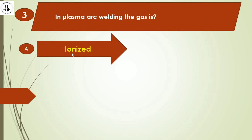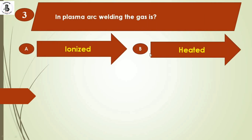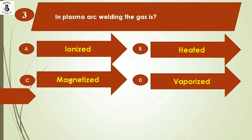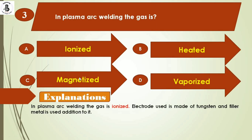Next question: in plasma arc welding the gas is — option A: ionized, option B: heated, option C: magnetized, option D: vaporized. In plasma arc welding, the gas is ionized. The electrode used is tungsten and filler metal is added additionally. So the right answer is option A: ionized.